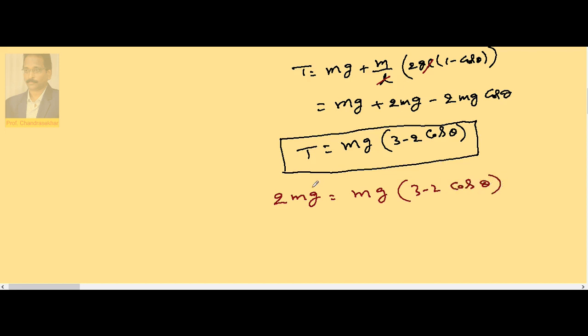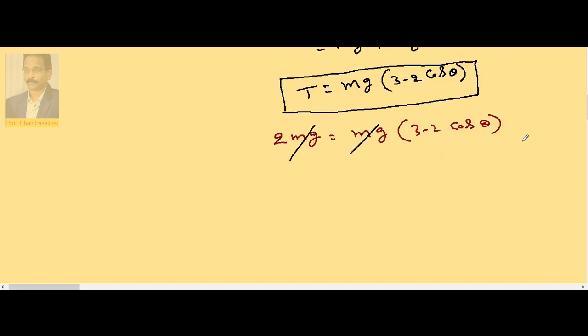So cancel Mg on both sides. Then if I simplify it, 2 is equal to 3 minus 2 cosθ or 2 cosθ is equal to 1 or cosθ is half implies θ = 60 degrees. So the maximum angular displacement we can give is 60 degrees.